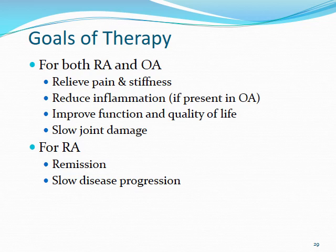The goals of therapy for both RA and OA are to relieve pain and stiffness, reduce inflammation, improve joint function and quality of life, and slow joint damage. For RA specifically, slowing disease progression and achieving remission of symptoms are major focuses.